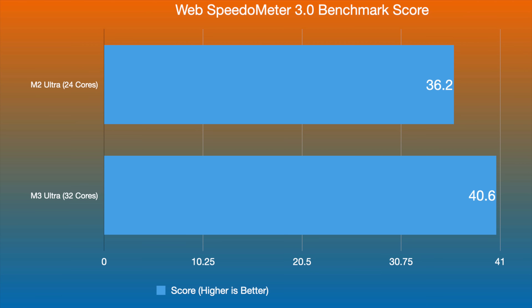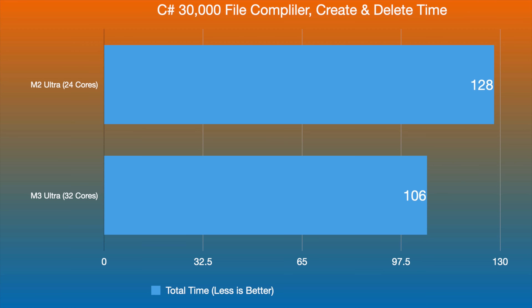Next I ran my C# 30,000-file compiler test, which creates and then deletes 30,000 files and times that process. The M2 Ultra with 24 cores completed this in 128 seconds, while the M3 Ultra completed the exact same test in 106 seconds. The M3 Ultra is ahead, but it's not a massive leap — more powerful, yes, but not by the leaps and bounds we probably expected.